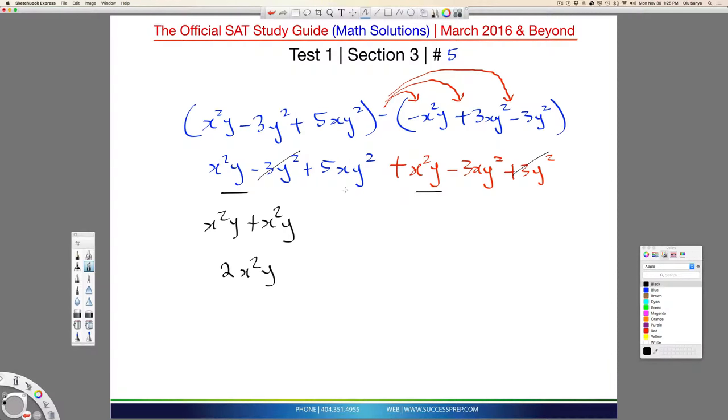And so those are taken care of, and now we have this left. We have this and this. Because this is 5xy squared, and this is 3xy squared minus, so this is going to be the plus 5xy squared minus 3xy squared.